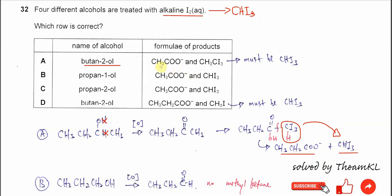So both products here are not really the products that can be produced. So A is wrong. It must produce these two: this propanoate ion and this triiodomethane.